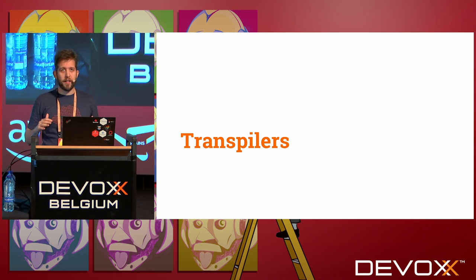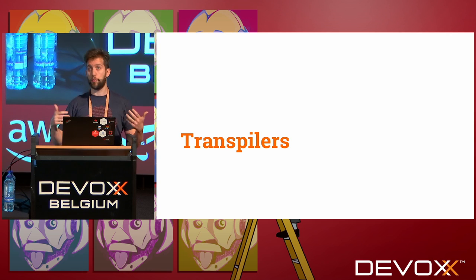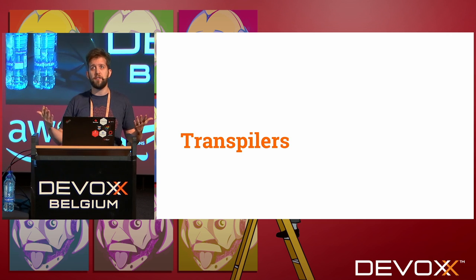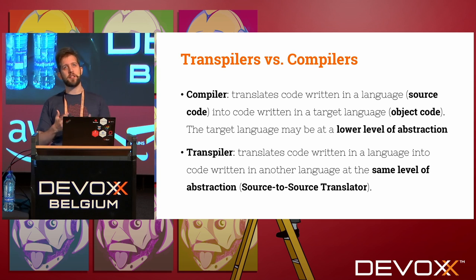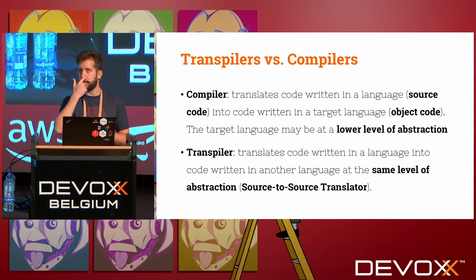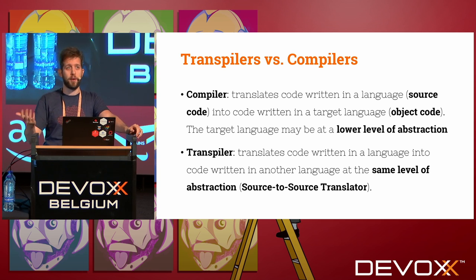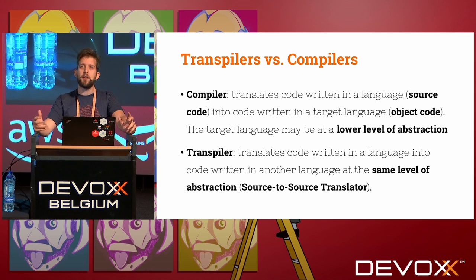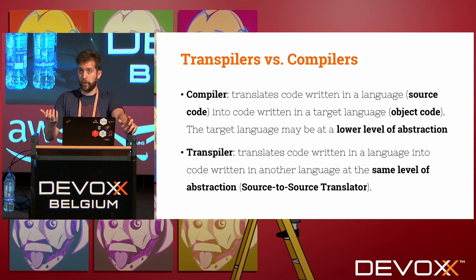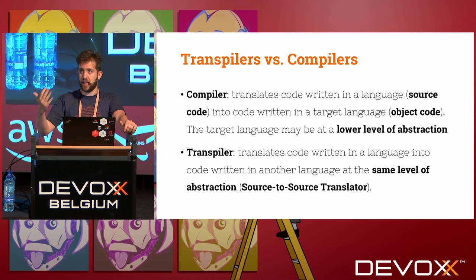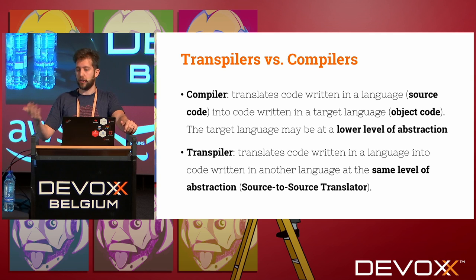The title of this talk is 'Your Program is a Transpiler.' The first question is: what's a transpiler? To answer that, we should first ask: what's a compiler? A compiler is a program that translates code written in some language — the source code — into code written in another language, the target language, which we sometimes call object code.